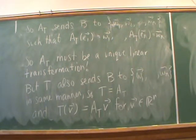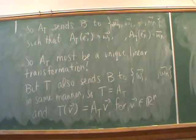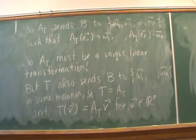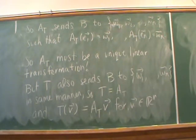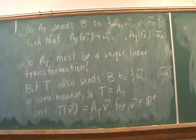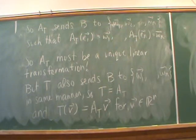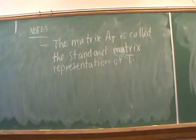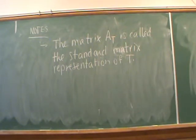From that theorem in the properties section, A_T must be that unique linear transformation. But T does the exact same thing — T is a linear transformation that sends our basis B to those same vectors in Rm in the exact same way. So we can't have two unique linear transformations; they must be the same. We get that T equals A sub T, meaning we can represent T acting on V as matrix multiplication on the left by A_T. We're going to call A sub T the standard matrix representation of our linear transformation T.